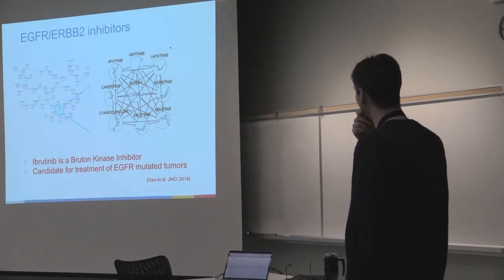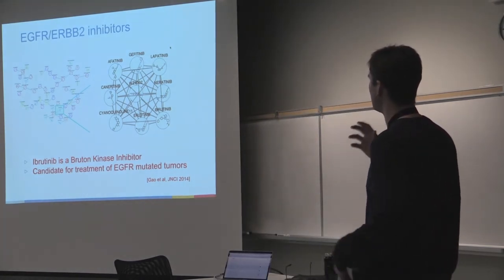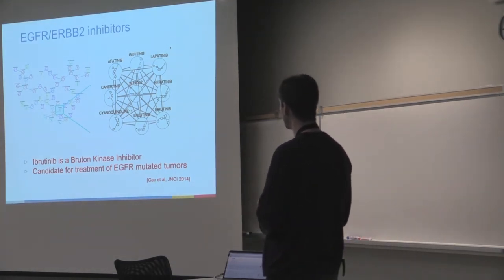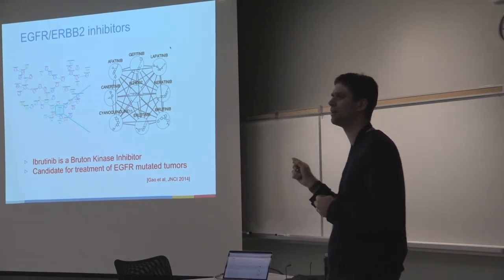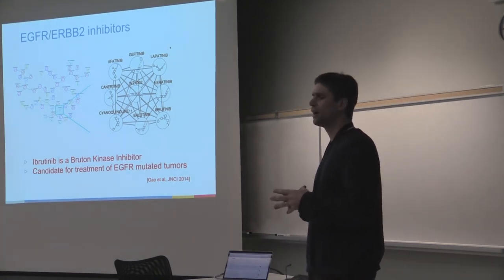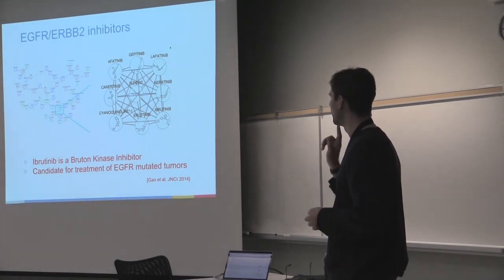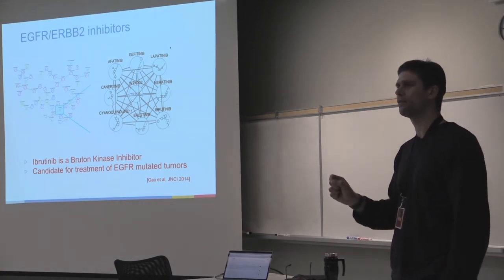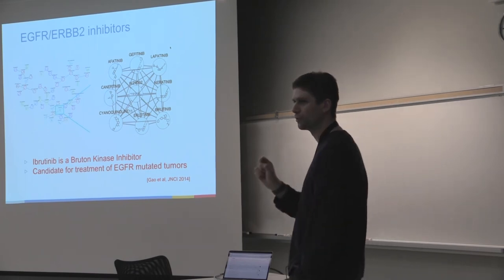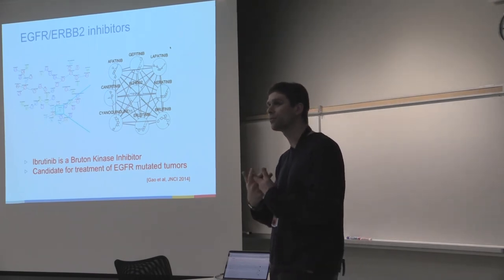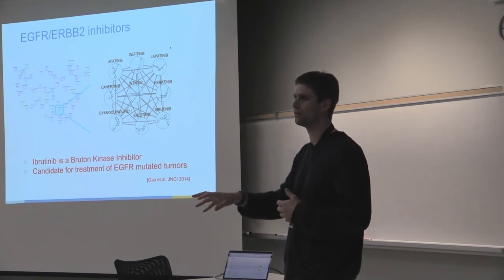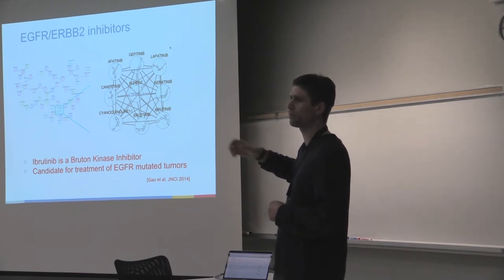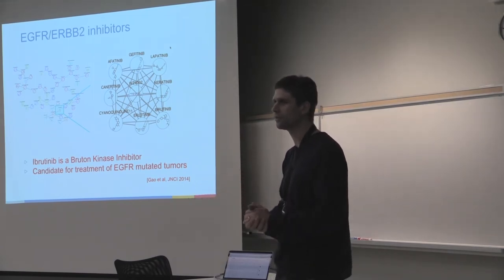This one is more interesting: we got all the EGFR and ERBB2 inhibitors clustered together — a good positive control. But there was a Bruton kinase inhibitor clustered with all the EGFRs, and that evidence is a little bit stronger. They actually found that the Bruton kinase inhibitor could be used for EGFR-mutated tumors — a clear observation that this drug is actually relevant for that type of disease. That's an example of drug repurposing. If you didn't have this paper, we could have predicted that this drug should be used on the same kind of patient.